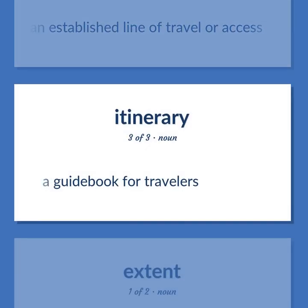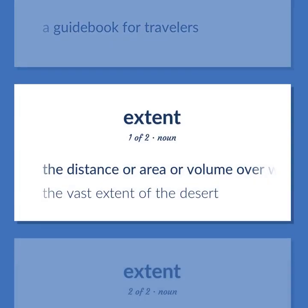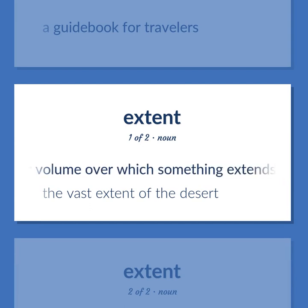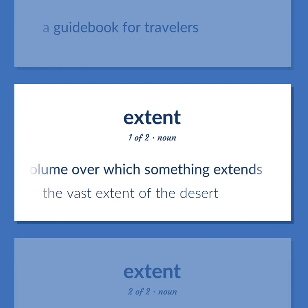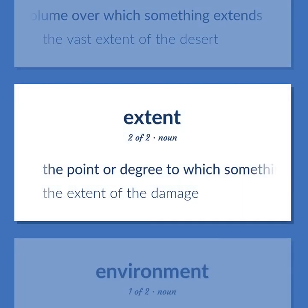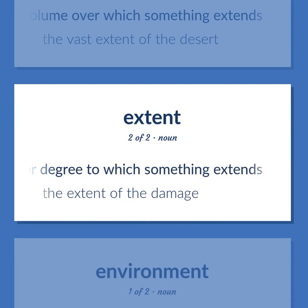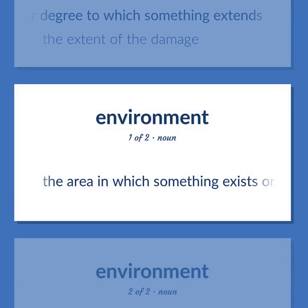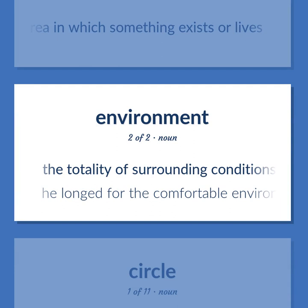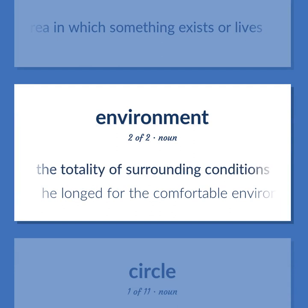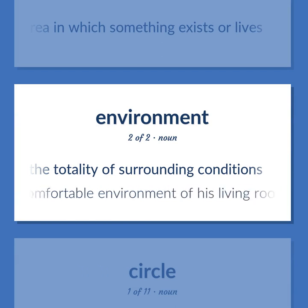Itinerary and Extent: A guidebook for travelers. The distance, area, or volume over which something extends — the vast extent of the desert. The point or degree to which something extends — the extent of the damage. The area in which something exists or lives. The totality of surrounding conditions — he longed for the comfortable environment of his living room.